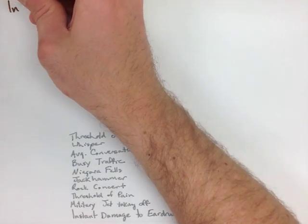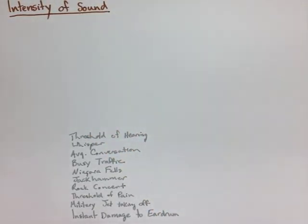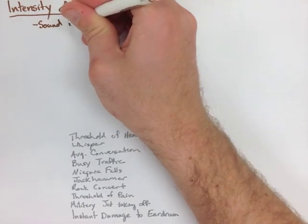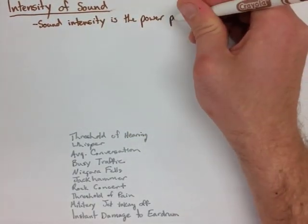When we're talking about the intensity of sound, we're talking about the power per unit area. And the units for that would be watts per meter squared, if we're using standard units.